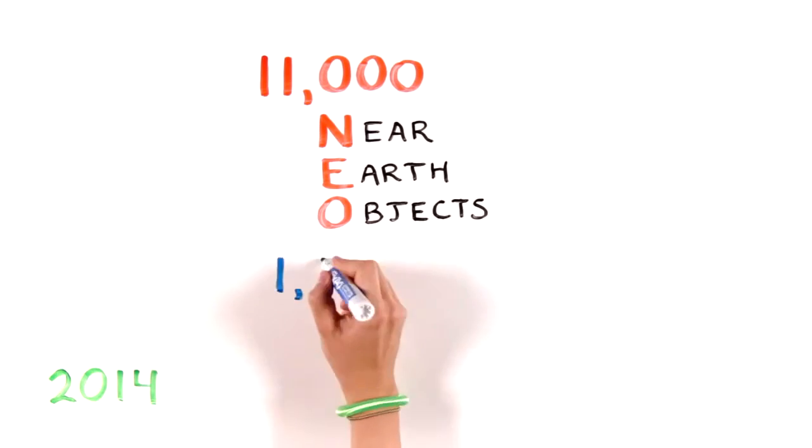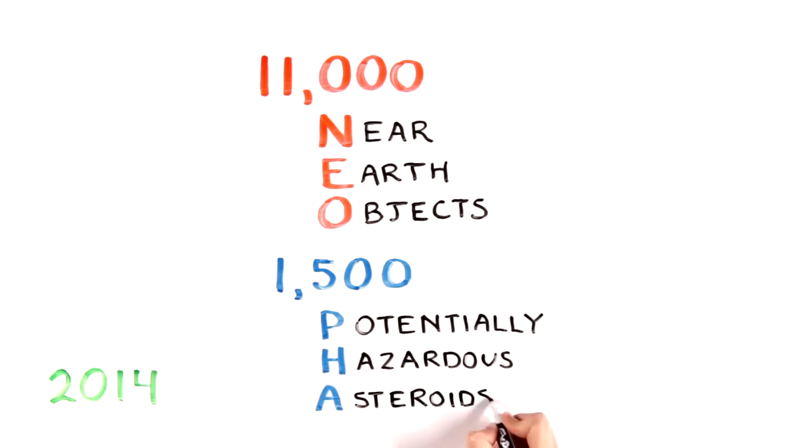Of those, astronomers are tracking about 1,500 potentially hazardous asteroids, whose orbits bring them too close for Earth's comfort.